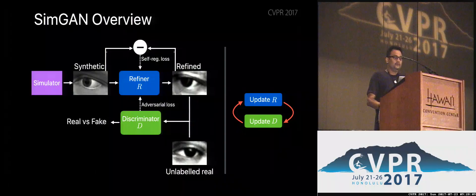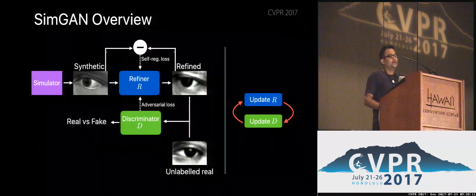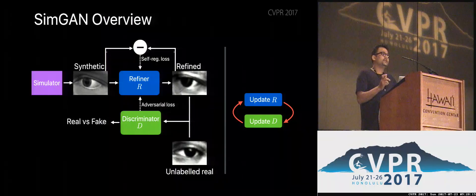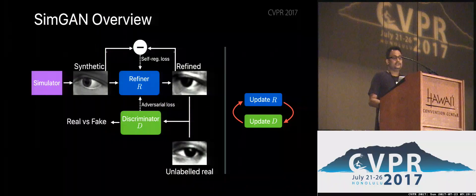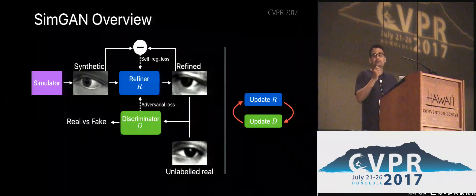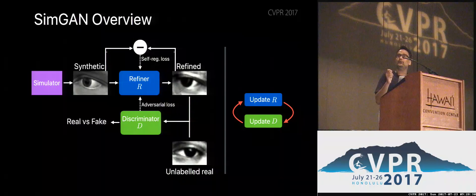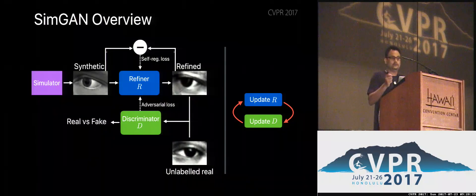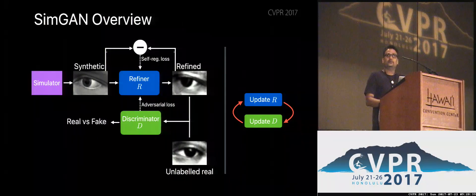In addition, we do not want to change the image too much — we want to preserve the annotation information, the global geometry, the shape of the eyes, for example. So we have an additional loss called the self-regularization loss, which minimizes the distance between the synthetic image and the refined image. This distance doesn't necessarily have to be in image space — it could be in any feature space — but in our experiments, minimizing the pixel difference was sufficient for the tasks we focused on.